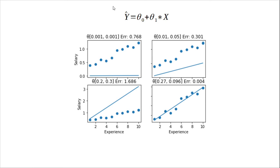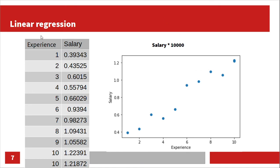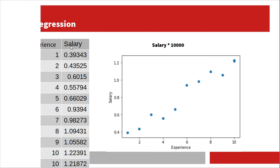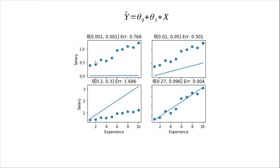But how do we draw the line? Here is the general equation of linear regression. Theta zero and theta one are parameters — we have to find their best values. Assume we start with random values as an example, and we replace them in the equation, where x is experience and y_hat is the predicted salary. Applying theta zero plus theta one times x gives us this line.